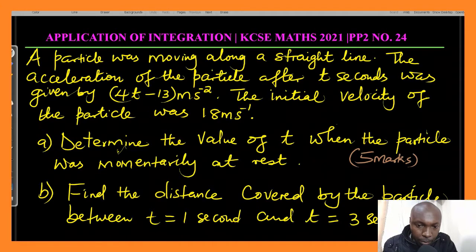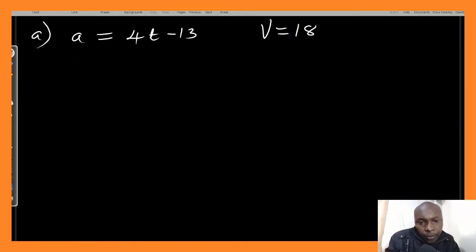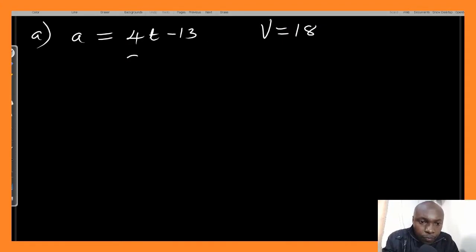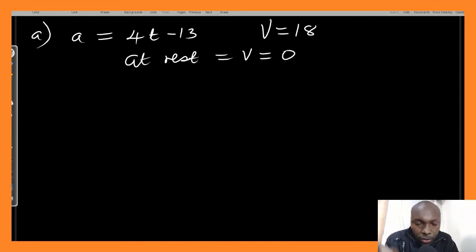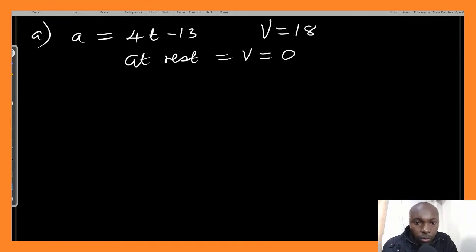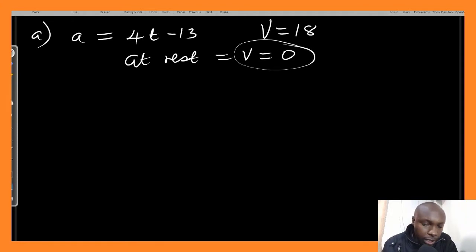Part a asks us to determine the value of t when the particle was momentarily at rest. One important thing to know before solving: the particle is momentarily at rest when velocity equals zero. The velocity of the particle will be equivalent to zero — this is very important and will help us solve the question.